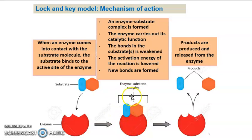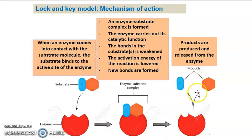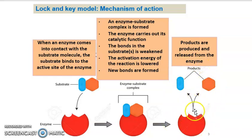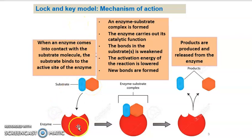New bonds are formed, and products are produced and released from the enzyme. The enzyme can then be reused again. Remember, for the lock and key model, the substrate accurately fits with the active site of the enzyme — it binds to the active site of the enzyme precisely.